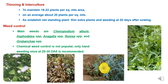For thinning and intercultural operations in mustard hybrid seed production, 18 to 22 plants per square meter should be maintained, with an average of 20 plants per square meter recommended for optimum yielding. Removal of extra plants and weeding should be done at 20 days after sowing to reduce crop-weed competition and competition within plants. For weed control, the major weeds in mustard are Chenopodium album, Asphodelus species, Anagalis species, Rumex species, and Orobanche species. Chemical weed control is not popular, so manual or hand weeding should be done at 25 to 30 days after sowing.